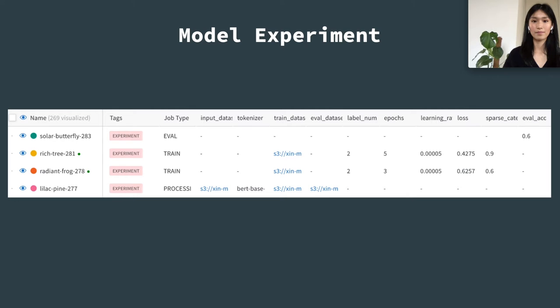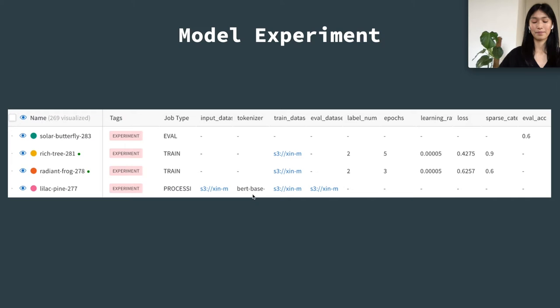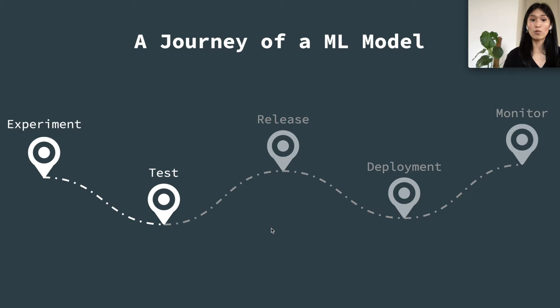This is what it looks like after model experiment and development. With all information captured in one tracking platform, we can better keep track of what experiments we have run. We can easily identify which experiments produce the best model, and we can also easily reproduce all experiments in the future with great traceability and reproducibility. After discovering the right approach with the correct model architecture and configuration to solve a specific problem, the model travels to the next stop to be tested — the model evaluation component in the MLOps system.